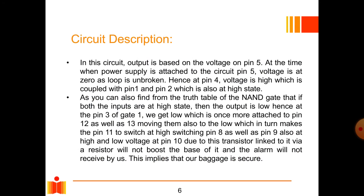Circuit description. In this circuit, the circuit output is based on the voltage on pin 5. At the time when power supply is attached to the circuit, pin 5 voltage is at zero as loop is unbroken. Hence at pin 4, voltage is high which is coupled with pin 1 and pin 2 which is also at high state. As you can also find from the truth table of the NAND gate, if both the inputs are at high state, then the output is low.